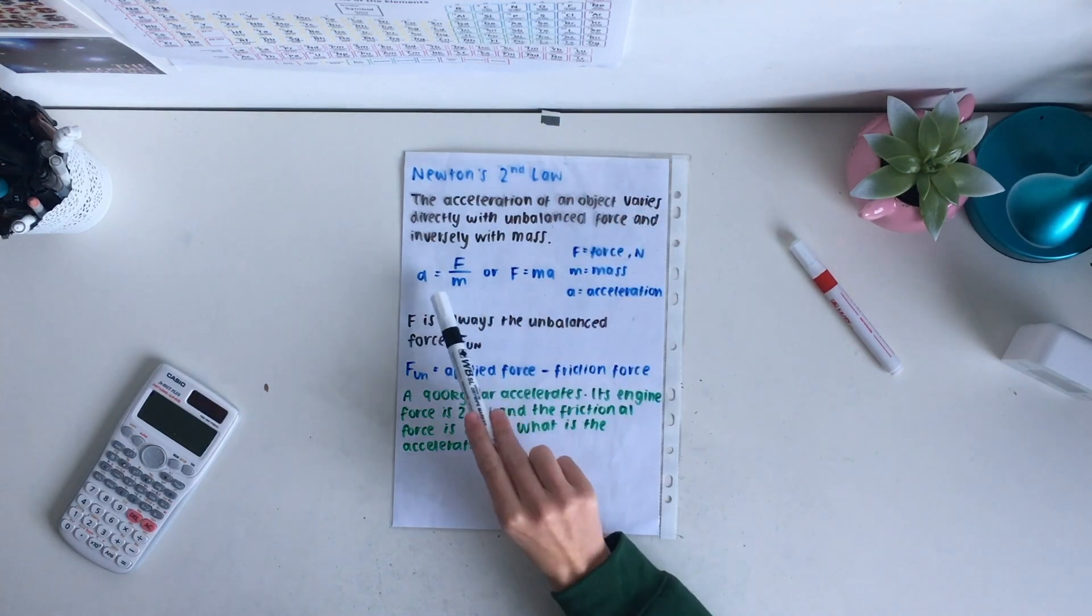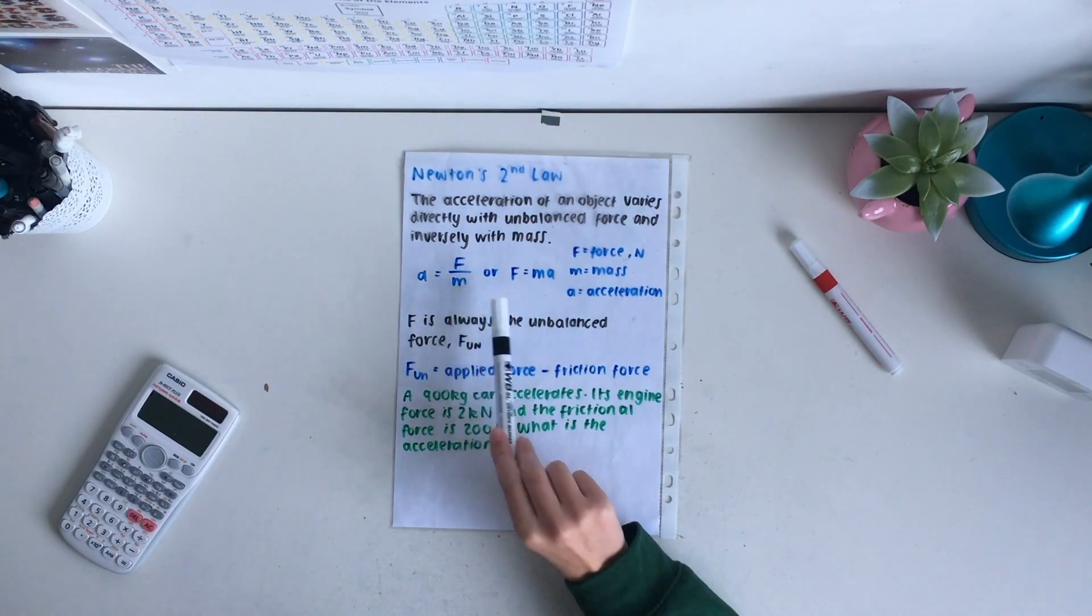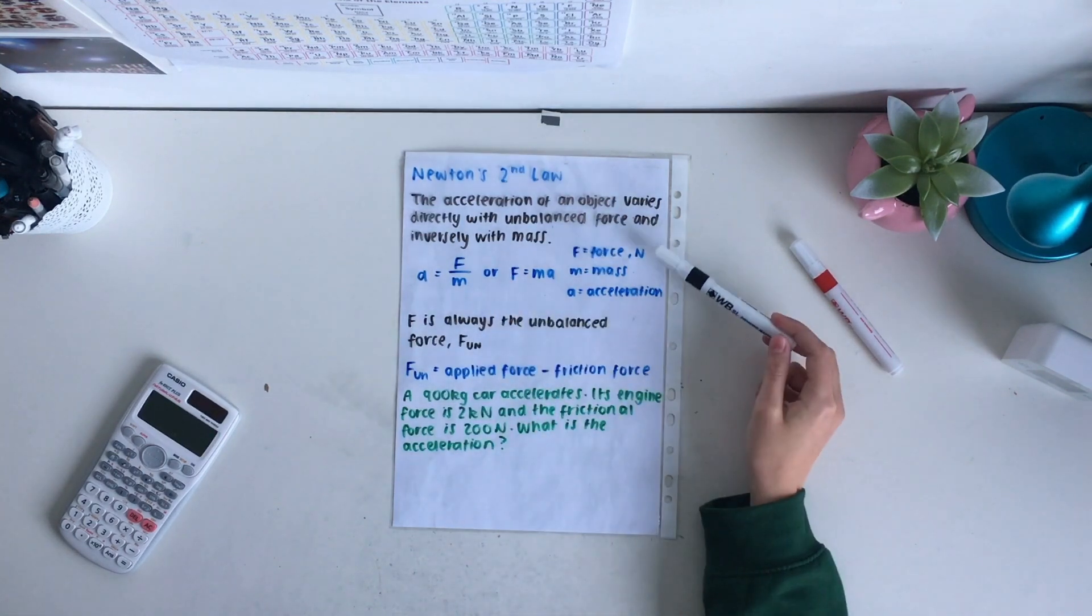This is shown through the formula A equals F over M, which can be rearranged to F equals MA, where F is the force in Newtons, M is the mass in kilograms, and A is acceleration in meters per second to the minus two.